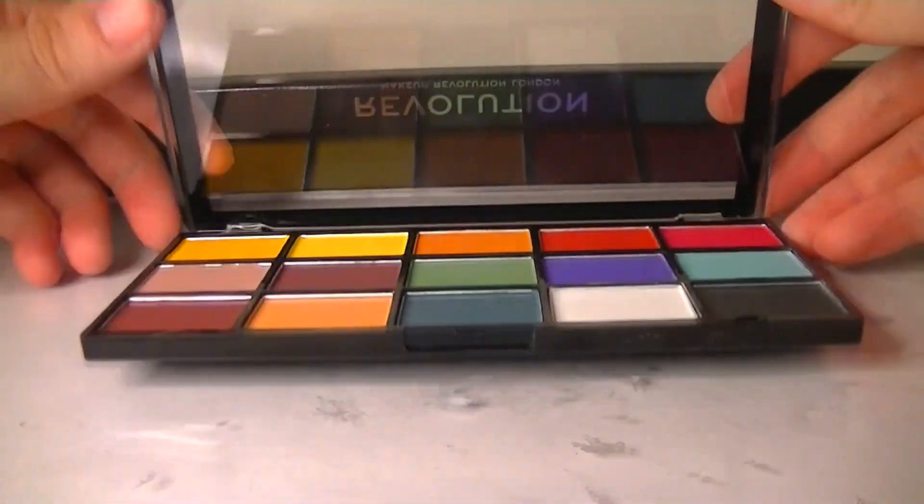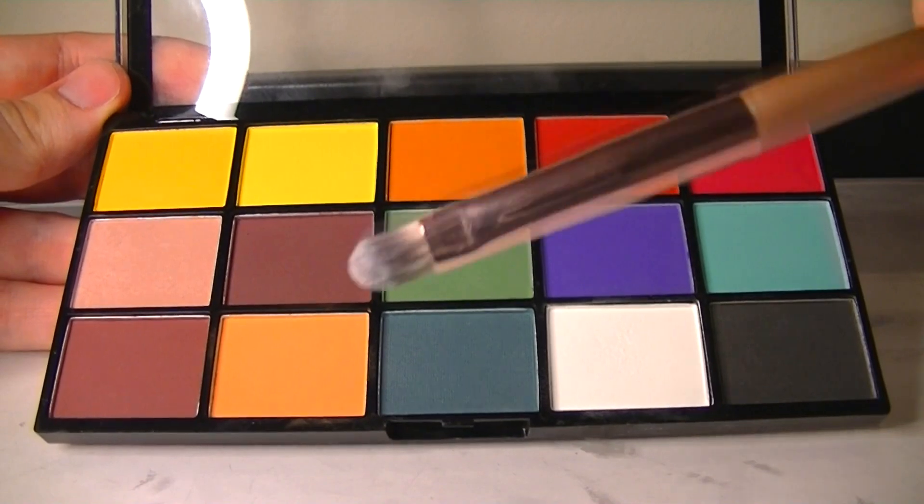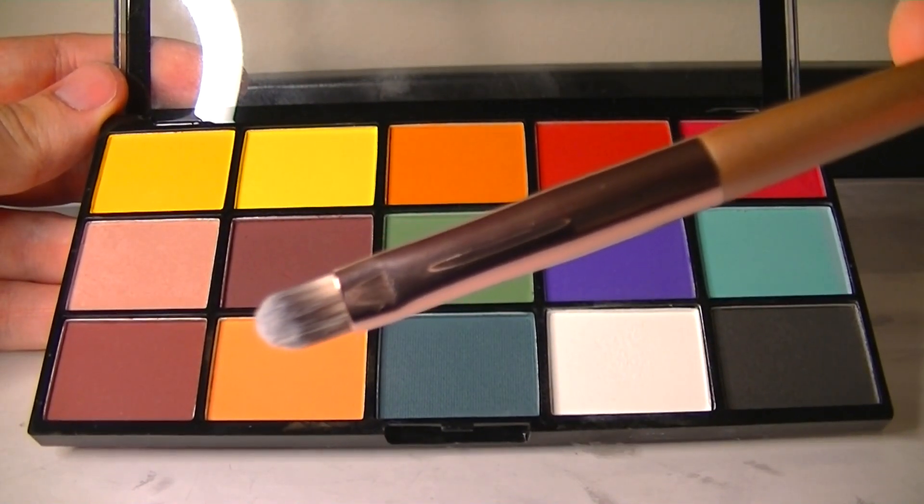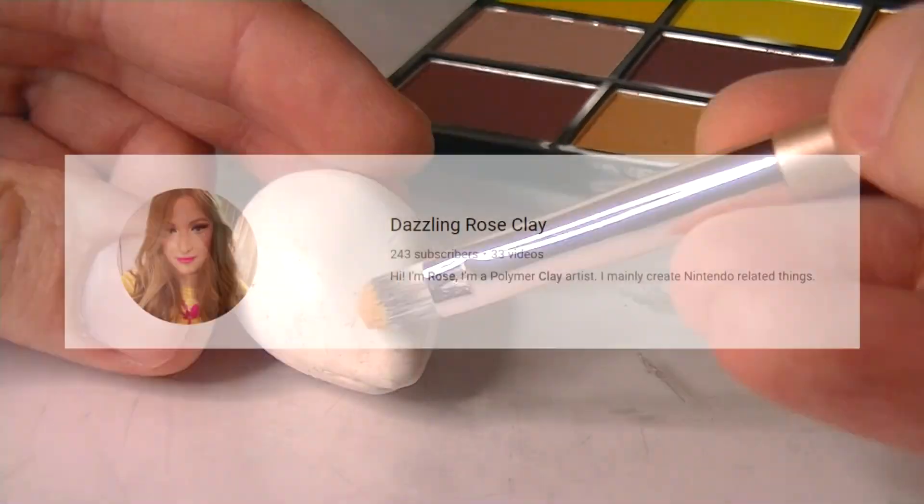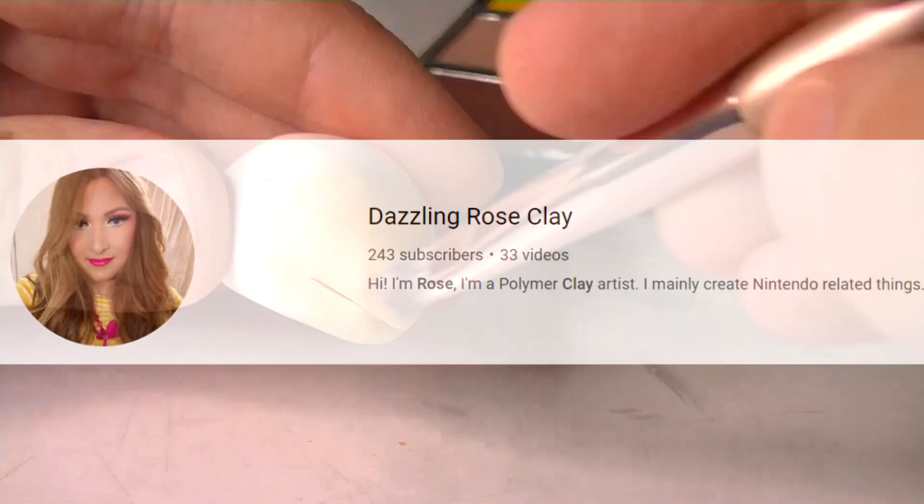Alright guys, it's time for a big reveal, because for the first time ever, I'm going to be using makeup on clay. Apparently it's a really easy way to make gradients and little splotches of color. I was inspired to try this method because of fellow YouTuber Dazzling Rose Clay, who's the first person I'd ever seen use makeup on clay.